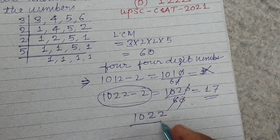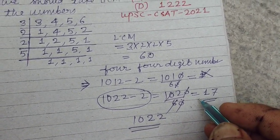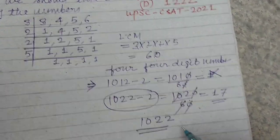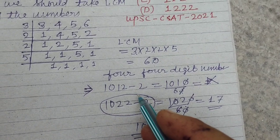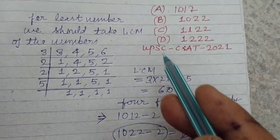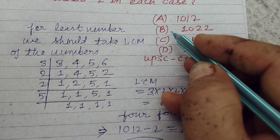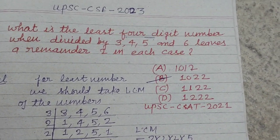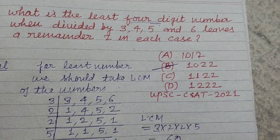1022 is the least four-digit number divisible by 3, 4, 5, and 6. So answer is B because only one option is correct, so the other options are incorrect.